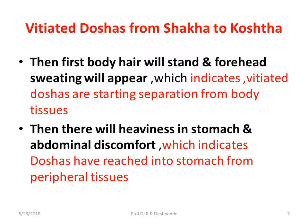What will happen with this paste and with Sneha and Svedana? The vitiated Doshas — vitiated Kapha and vitiated Pitta — will start coming from all over the body, from the Shakha region and from the extremities, to the Kostha. Kostha means viscera — the stomach. All the Doshas will gather and secretions will start increasing in the stomach. How do we identify that this process has started? First, body hair will stand erect and there will be sweating on the forehead. These two symptoms indicate that vitiated Kapha and Pitta are beginning to separate from the body tissues.